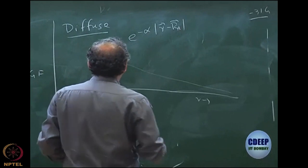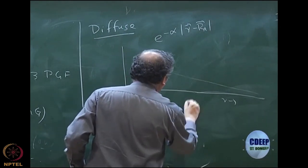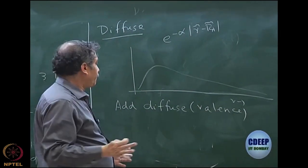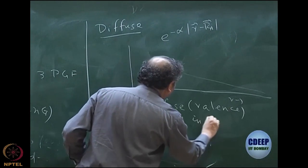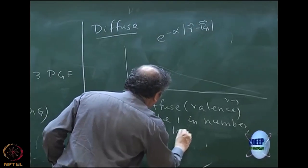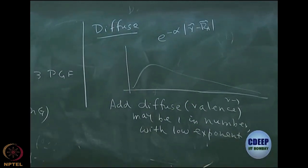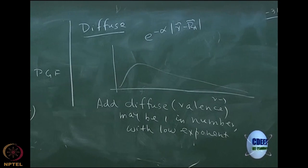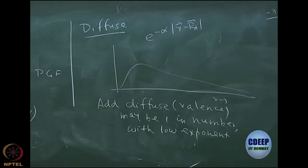For carbon, you add only S and P — that is good enough. You do not need to add D. Valence diffuse functions, maybe one in number — they would be Gaussians with very low exponent. At least one is required for many problems, particularly if you want to calculate electron affinity, where the anion's electron has an effect at a very large distance from the nucleus. Many times even excitation energies and hydrogen bonds, which are diffuse over a long range, require diffuse functions.